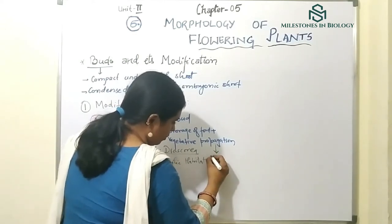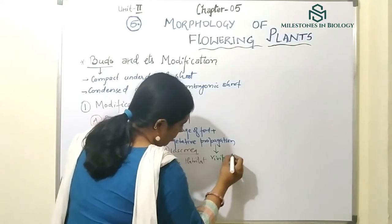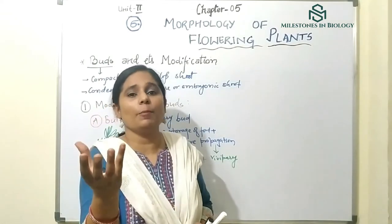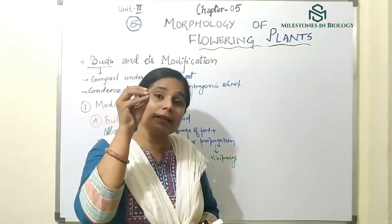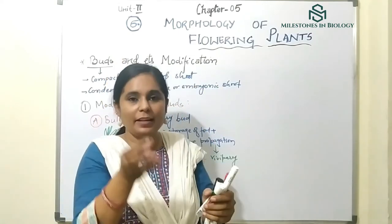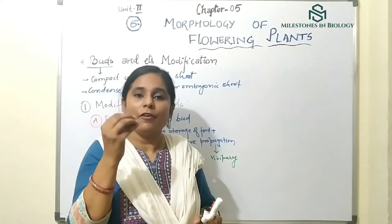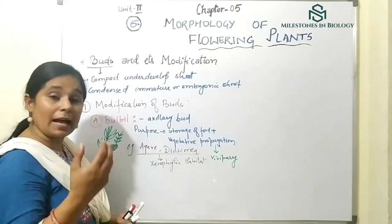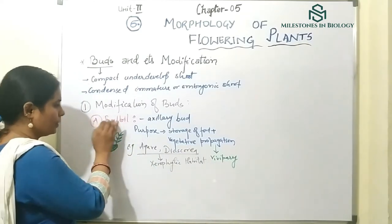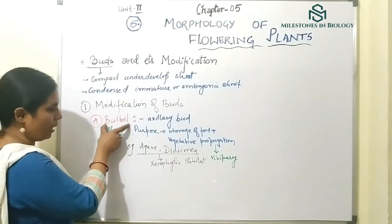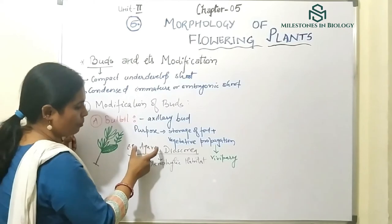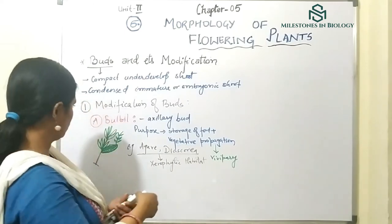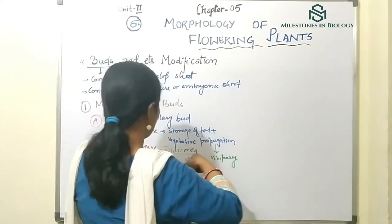In biology terms, this can also be called vivipary — a phenomenon in which the seed grows into a plant while still inside the mother plant. This modification of the bud is the bulbil, seen in Agave and Dioscorea, and it serves two purposes: storage of food and vegetative propagation.